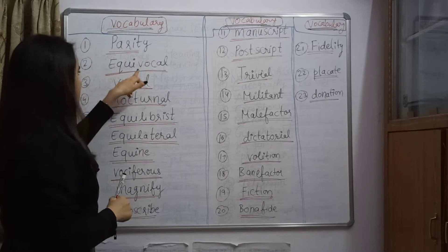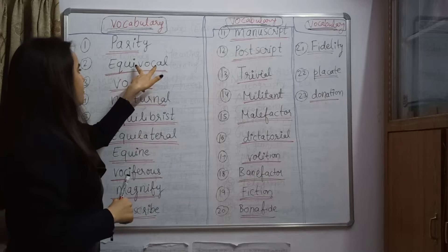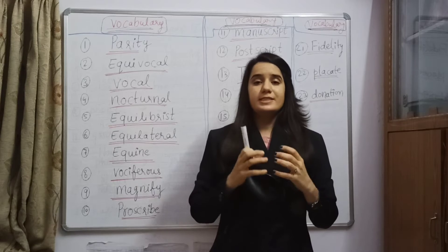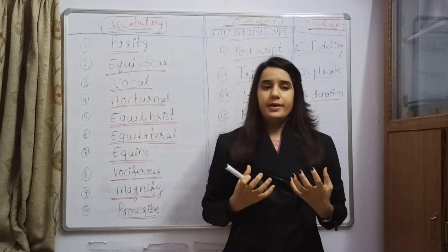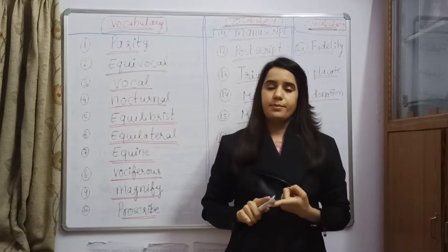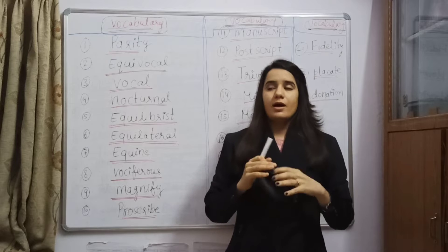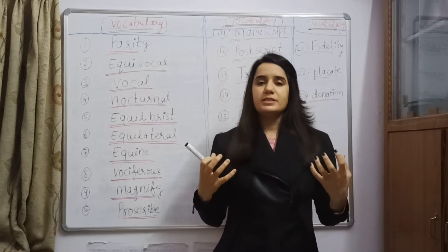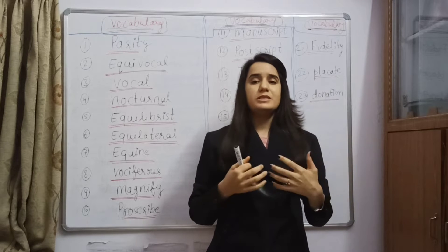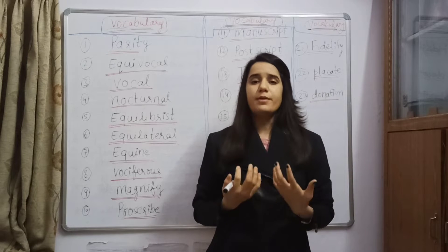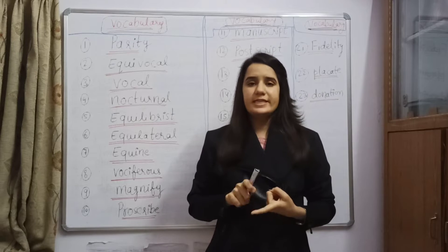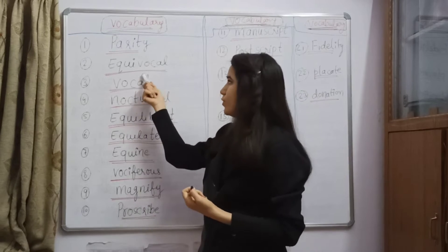Second is equivocal. Equi means equal and voc means voice. The one who doesn't take his stand — he is neither yes nor no, meaning he is at balance. He is doing misleading, and intentionally. The one who misleads intentionally, we will say he is equivocal.